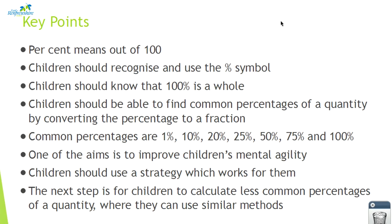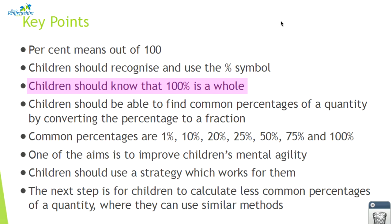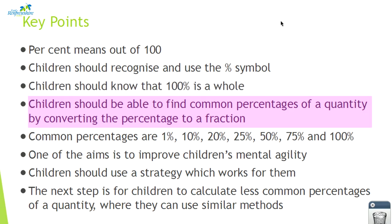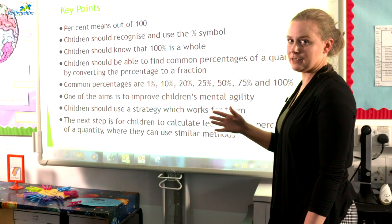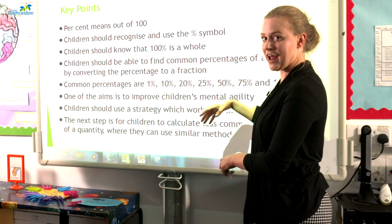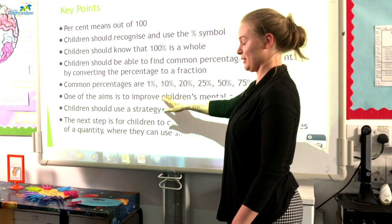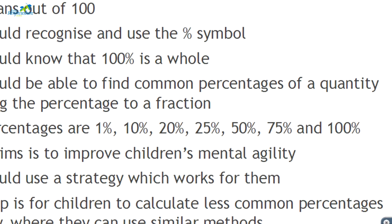In summary, percent means out of a hundred. Children should be able to recognise the percentage symbol, know that a hundred percent is a whole, and find common percentages of a quantity by converting the percentage to a fraction. The common percentages we would want children to know at this level are one percent, ten percent, twenty percent, twenty-five percent, fifty percent, seventy-five percent, and a hundred percent. We showed children converting ten percent into ten out of a hundred and then simplifying the fraction. Eventually we would hope children remember: ten percent equals a tenth, twenty percent equals a fifth, twenty-five percent equals a quarter, fifty percent equals a half, seventy-five percent equals three quarters, and a hundred percent is the whole.